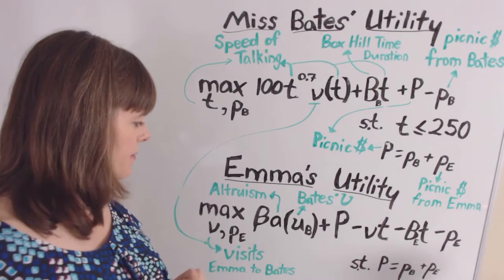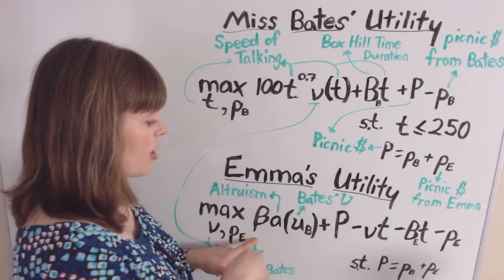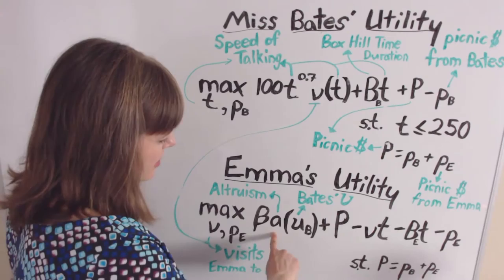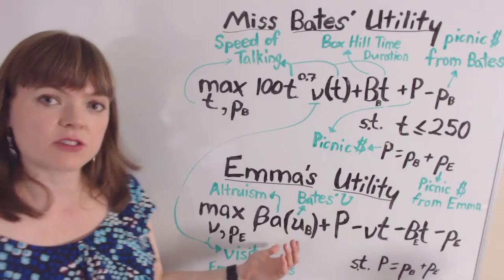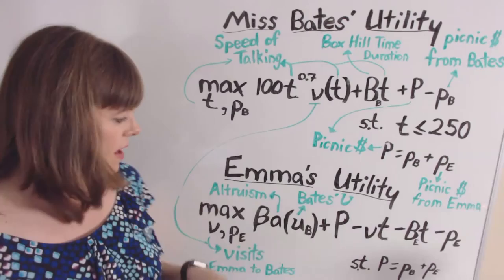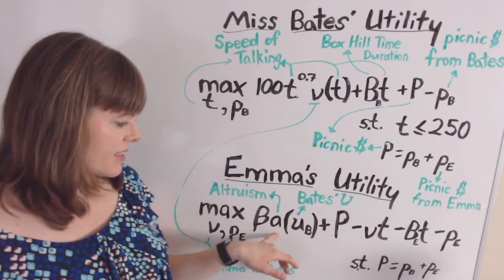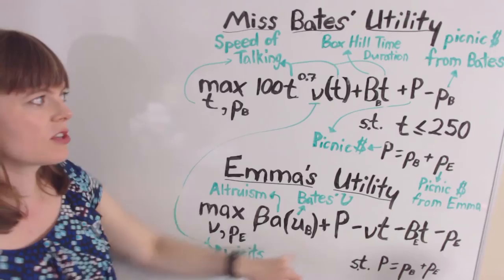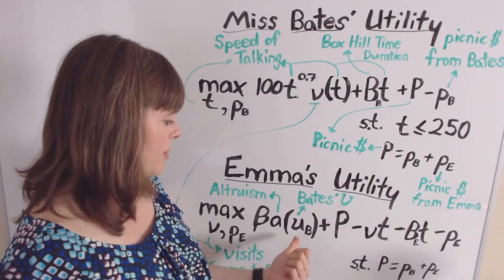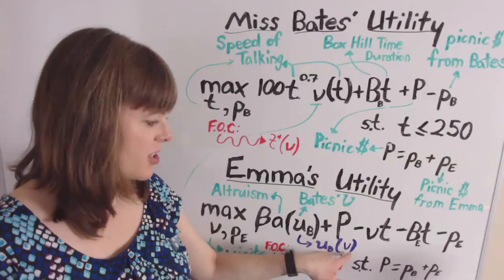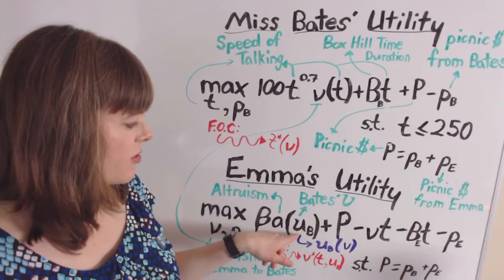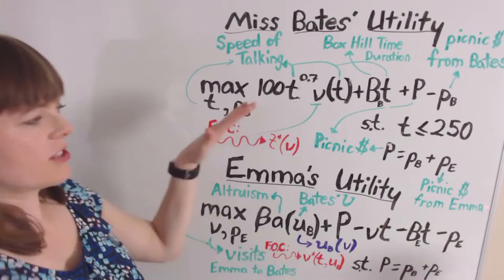Now let's look at Emma's utility. The first term uses beta, an importance weight, multiplied by A, which is her altruism level — how much she cares about other people's utility. In this case it's Emma's altruism toward Miss Bates, the only two people in this model. Emma's altruism is a function of Miss Bates' utility, which we already know. This is important because Emma can actually influence Miss Bates' utility by visiting her more often. Utility of Miss Bates depends crucially on Emma's visits.